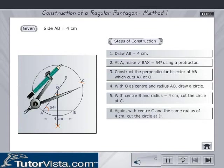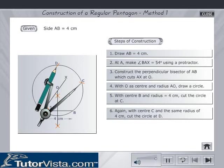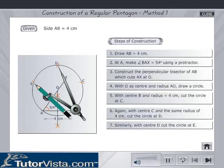Again, with center C and the same radius of 4 cm, cut the circle at D. Similarly, with center D, cut the circle at E.